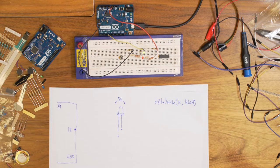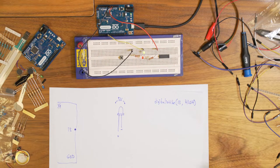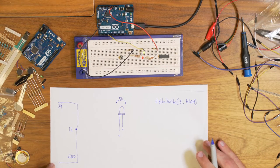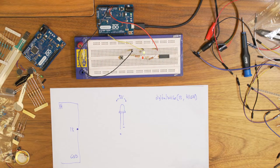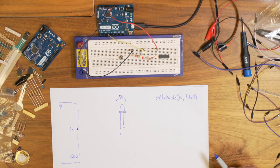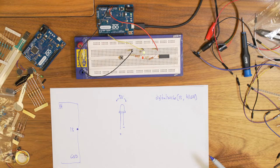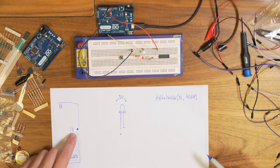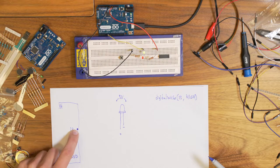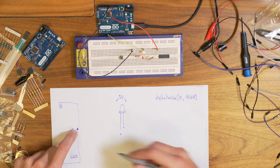Voltage can never be on its own. Voltage is always measured between two points. So what does it mean when you say I put five volts in that place? Well, it's five volts in relation to ground.